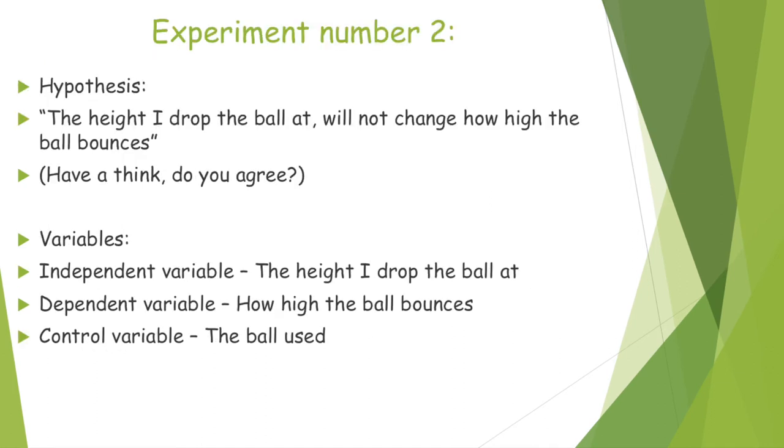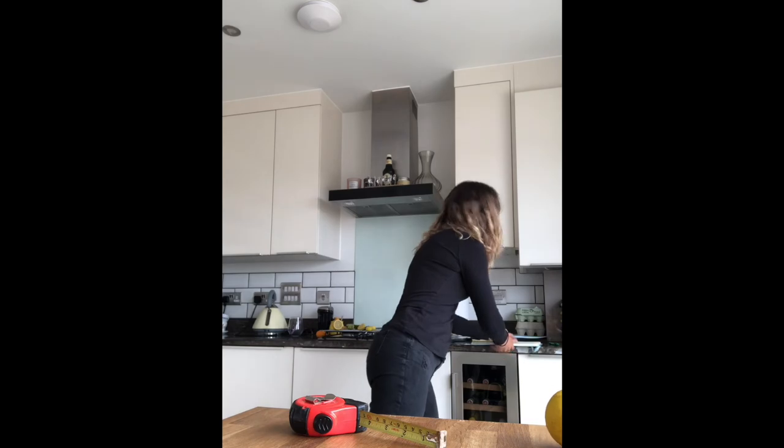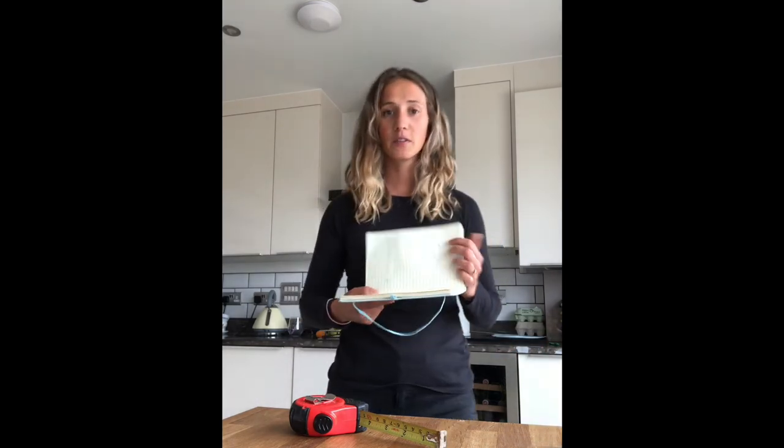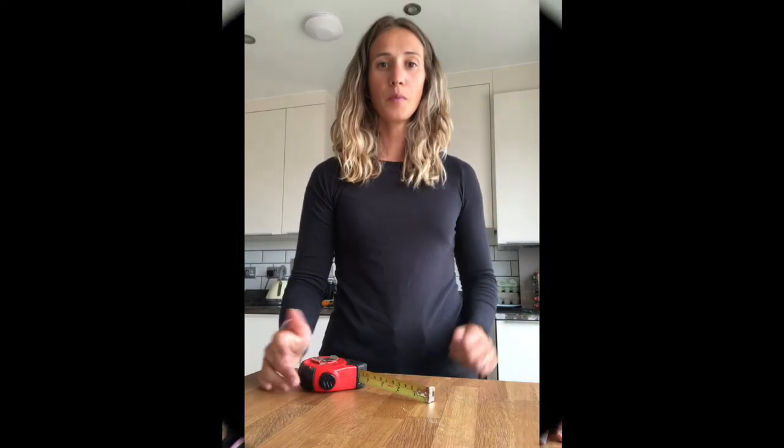Now for the second experiment. Here is all the information you need to know. Now there's an opportunity for you to get involved — we're going to look at a ball drop experiment. You'll need a tape measure, a ball, a pen and paper for a table of results, and it'll be really handy if you have another person to help with the ball drop. Here is the table of results I'd like you to draw up so you can log your data as we go along.